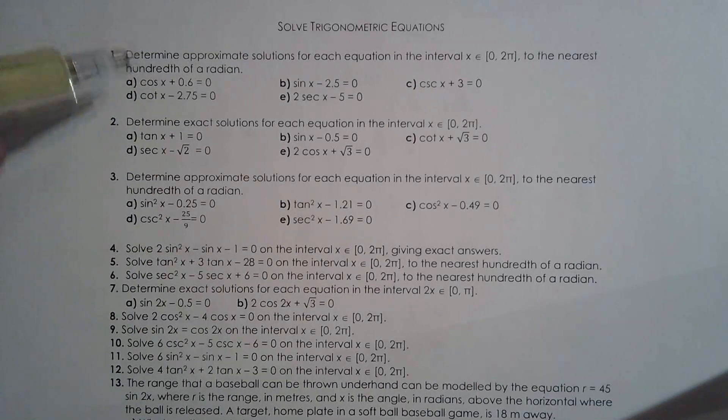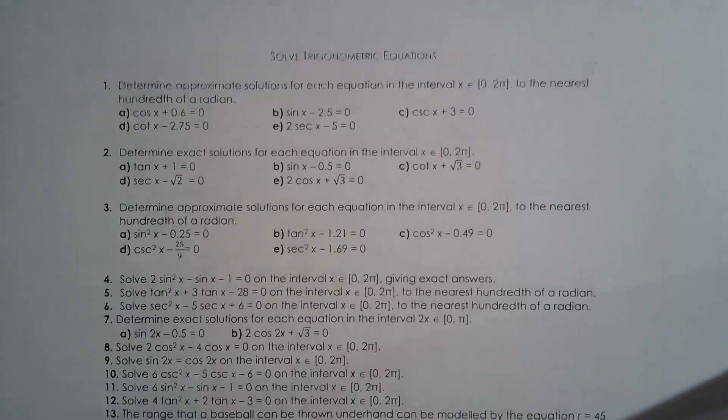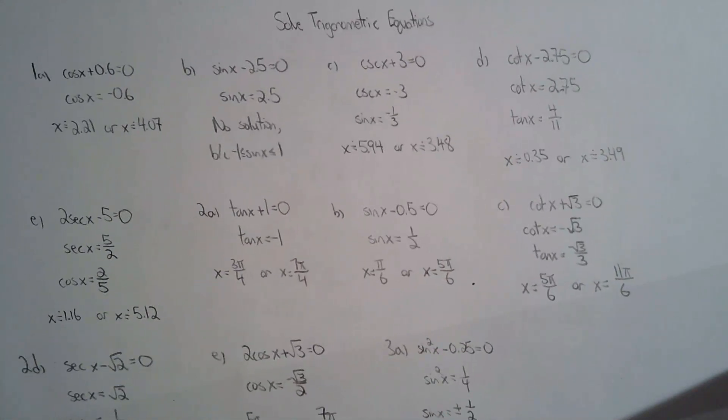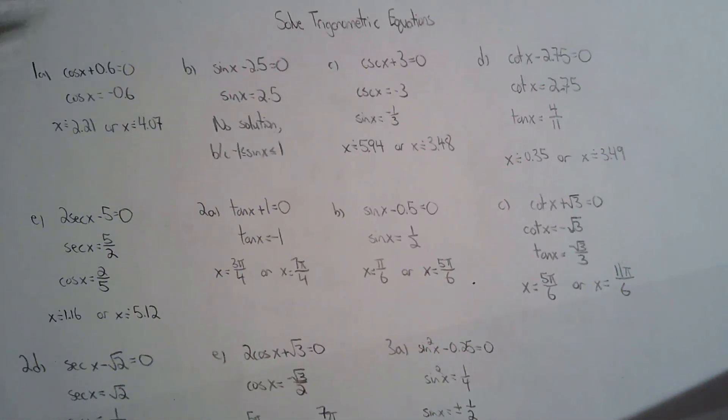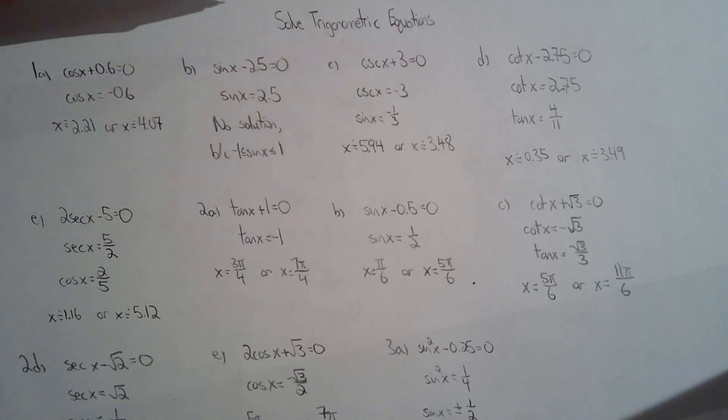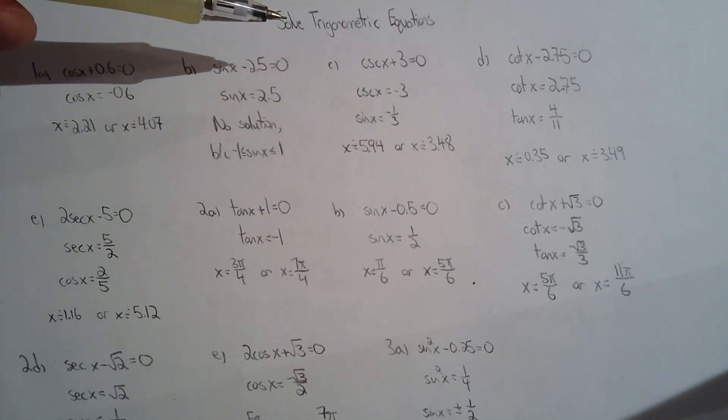For question one, you're really doing the same thing—just isolating cos x or whatever the trig function is. If it's a reciprocal trig function like in part C with cosecant x, I just took the reciprocal of the ratio and changed it to sine x, one of the primary trig functions. I prefer to work with sine, cos, and tan.